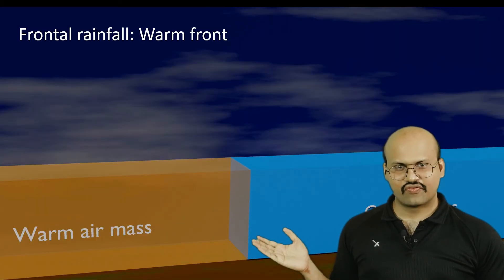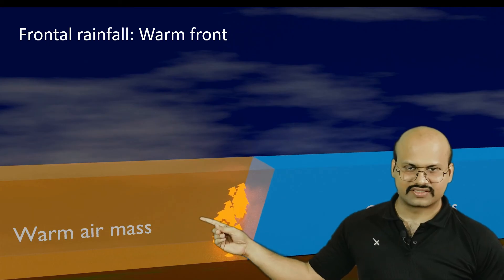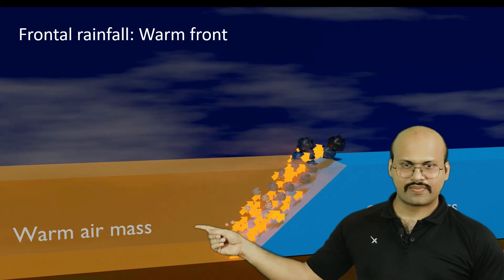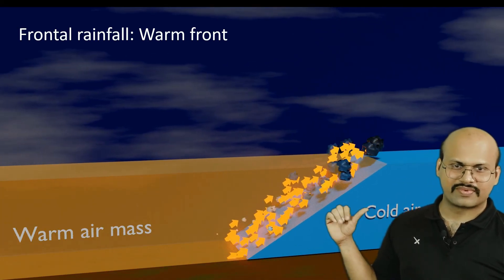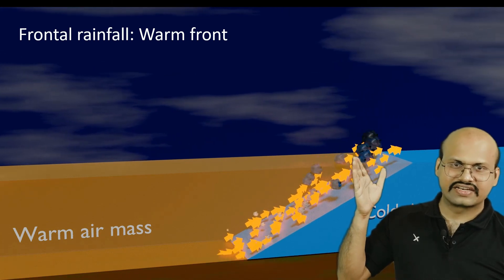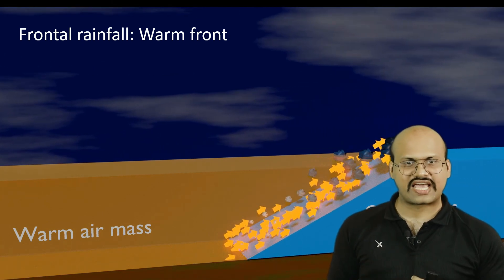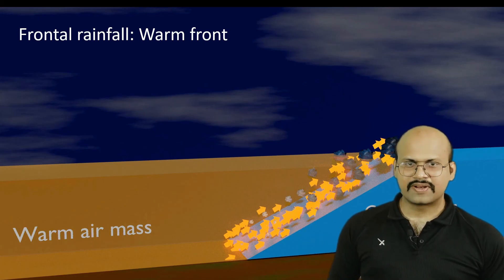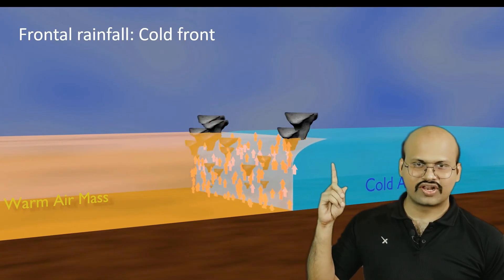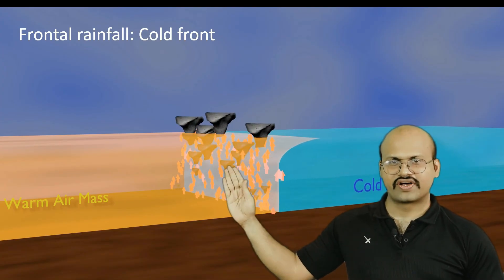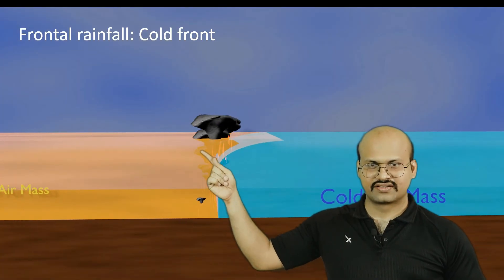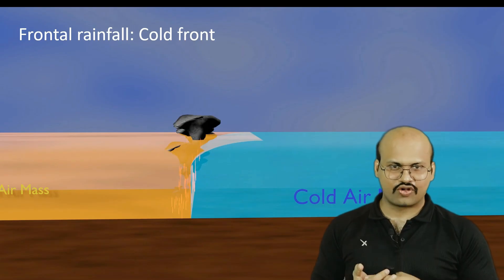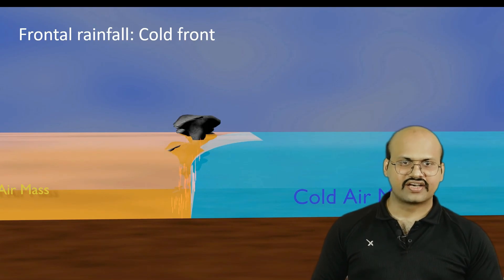At a warm front, there is a cold air mass and a warm air mass. The warm air mass tries to move toward the cold air mass, and as it pushes forward it rises up — clouds are formed and rainfall occurs. Here there is no cyclonic airflow, so this kind of rainfall is called frontal rainfall. A similar mechanism occurs at a cold front, where the cold air mass pushes forward and causes rain in the frontal region. Both cyclonic and frontal rainfall are therefore classified under one mechanism.